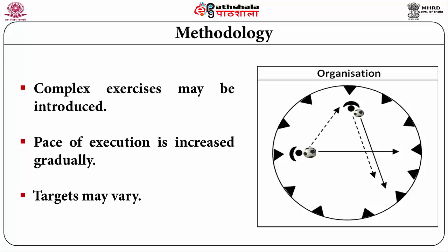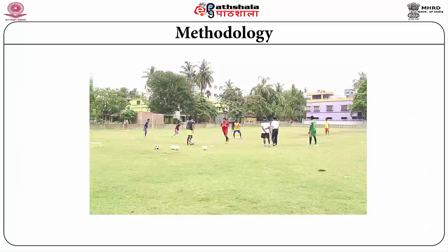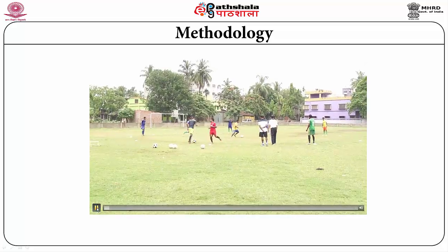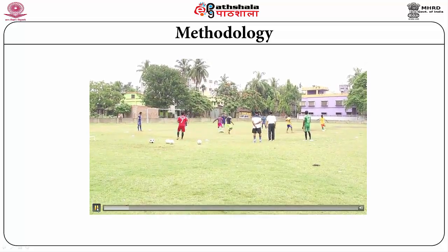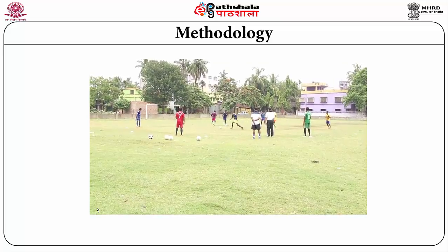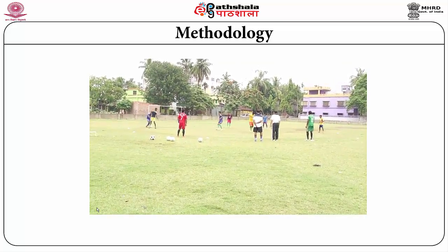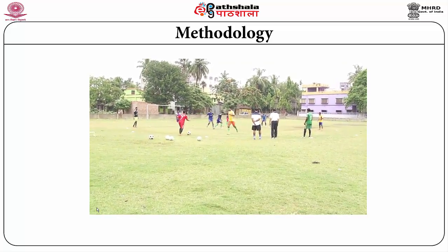Earlier it was simple; now complex exercises may be introduced. The pace of execution is increased gradually, and the targets may vary. Here is a small example: players are getting two balls of two different colors — one they are following, the other one they are moving. After passing, they are moving to a new place.